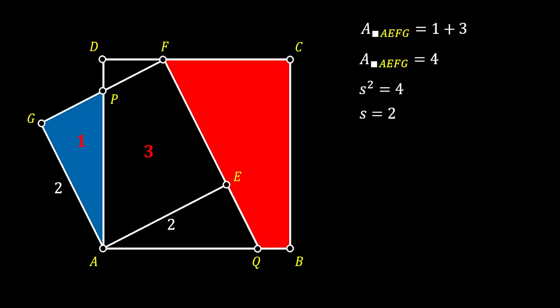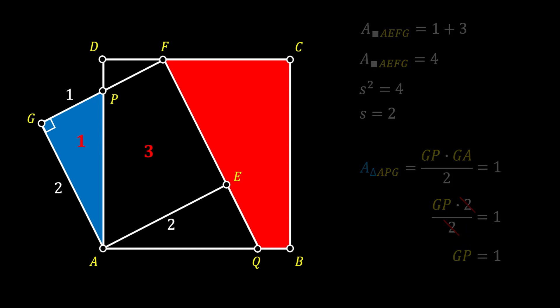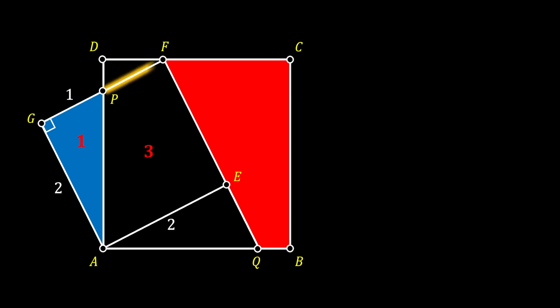Now let's set our attention to the triangle APG. We know that this triangle is actually a right triangle, so we can use the formula for the area of this right triangle, which is equal to the product of its legs over two. We know that this triangle has the area with a value of one, so if we substitute the value of the leg GA, after simplification we can conclude that the length of the line GP is equal to one.